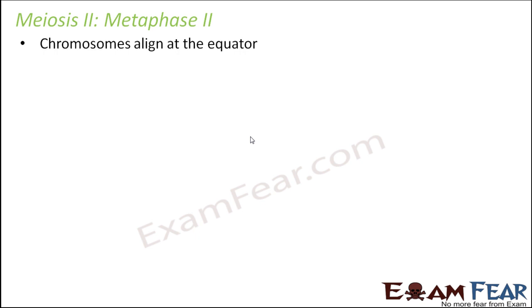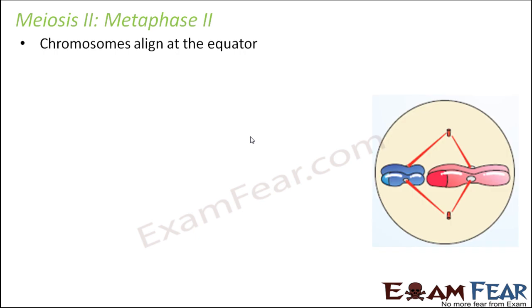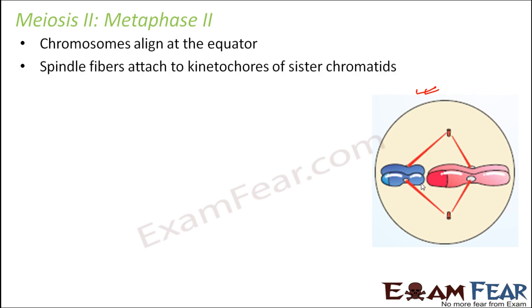In metaphase 2, chromosomes again align at the equator to form the metaphase plate. Looking at this picture, it resembles exactly mitosis. You have two chromosomes connected through their kinetochores to the microtubules, all aligned at the equator. The only difference is that the equatorial plate is rotated by 90 degrees compared to meiosis 1. Otherwise the concept is the same, forming the metaphase plate.